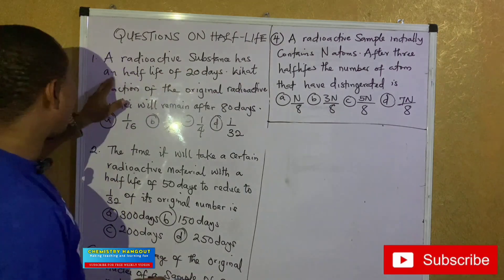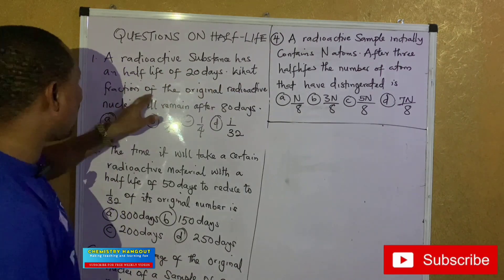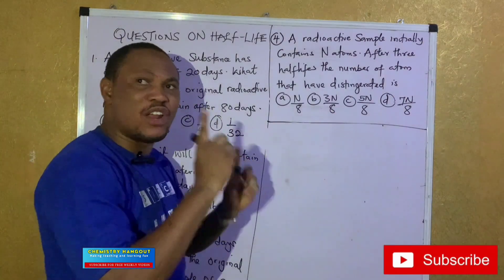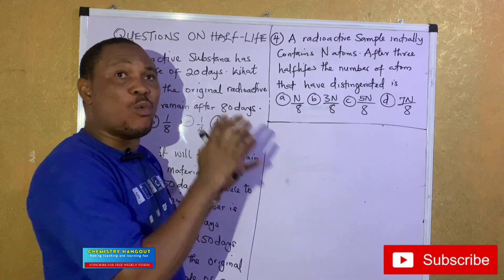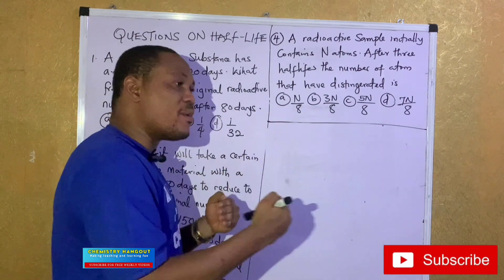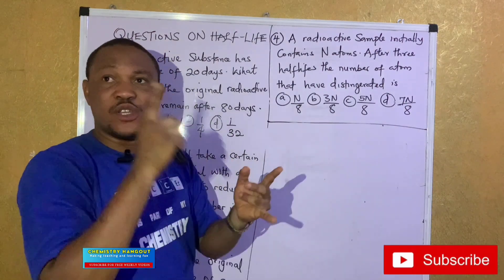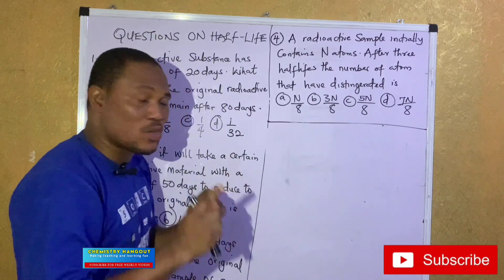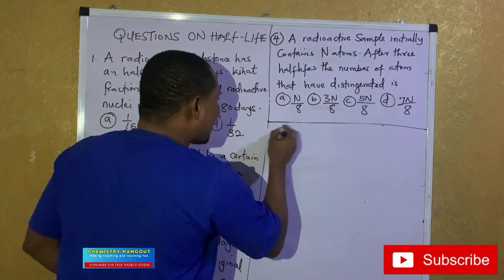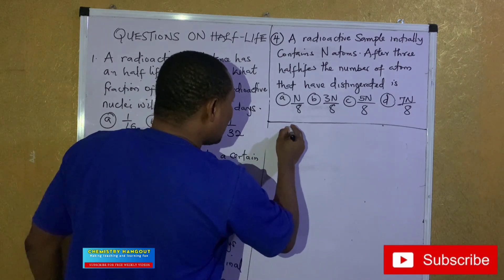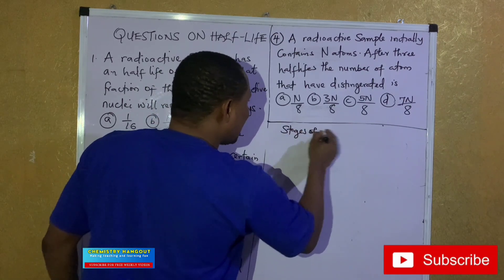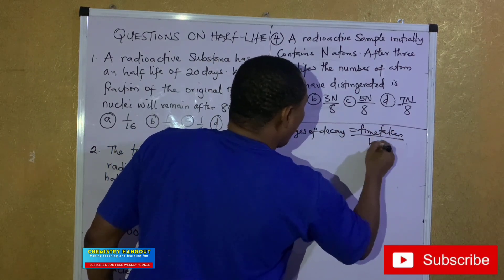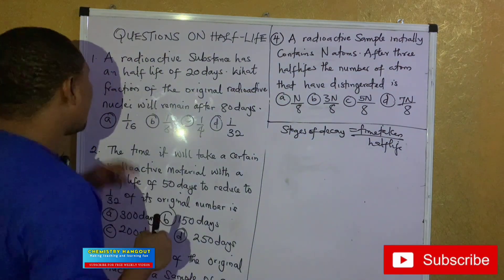The formula I gave is: stages of decay = time taken over half-life. They said the radioactive substance has a half-life of 20 days and we need to find what fraction remains after 80 days. So the stages of decay = 80 over 20 = 4 stages. The options are in fraction form, so we'll be solving in fractions. This means the nucleus will decay in four stages.